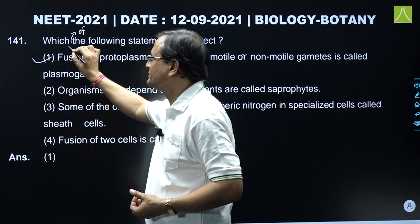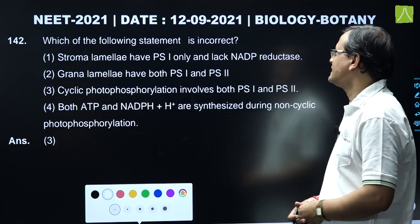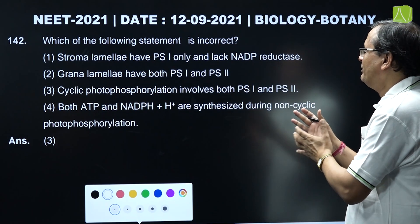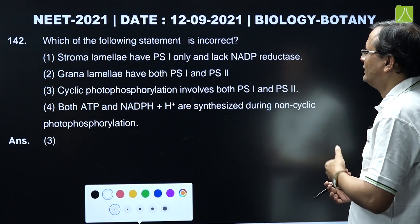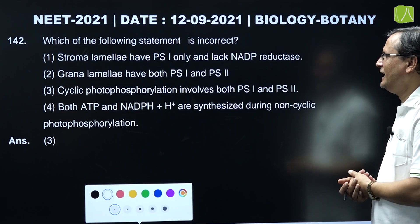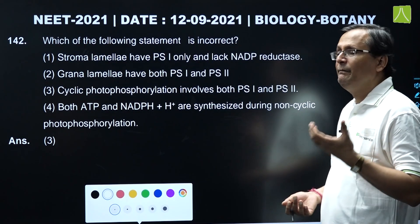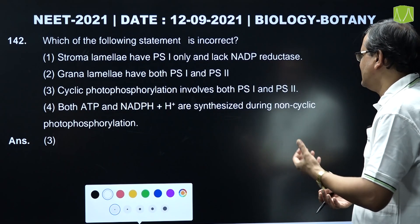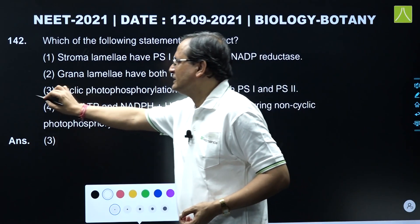Question 142: Which of the following statements is correct? Option 1 - stroma lamellae have PS1 only and lack NADP reductase - this is correct. Option 2 - grana lamellae have both PS1 and PS2 - this is also correct. Option 3 - cyclic photophosphorylation involves both PS1 and PS2 - this is wrong, because in cyclic photophosphorylation only PS1 is involved. Option 4 - both ATP and NADPH+ are synthesized during non-cyclic photophosphorylation - this is also correct. So the third option is wrong, and the answer is option third.